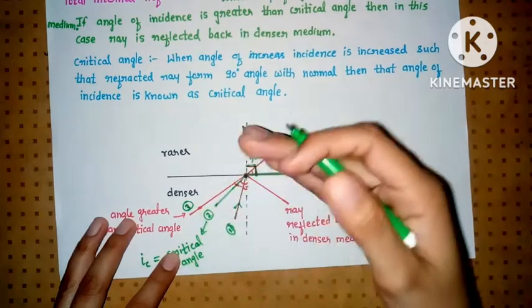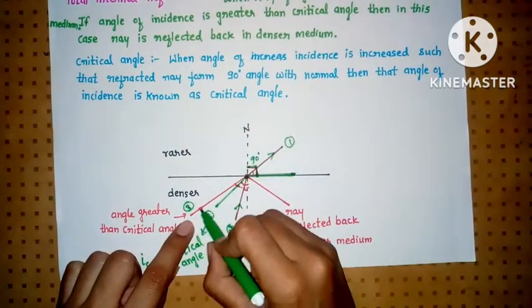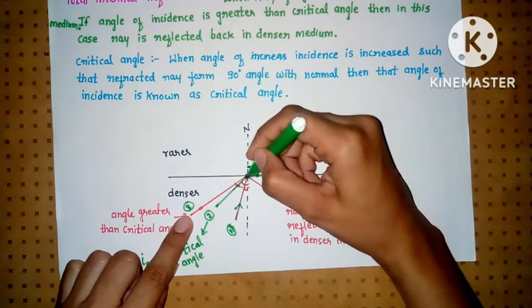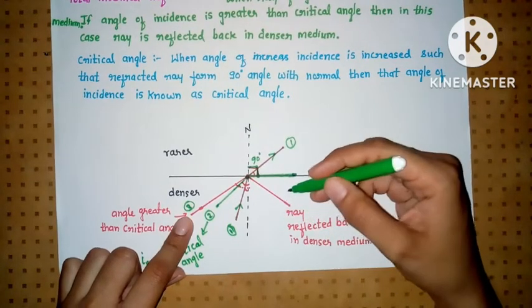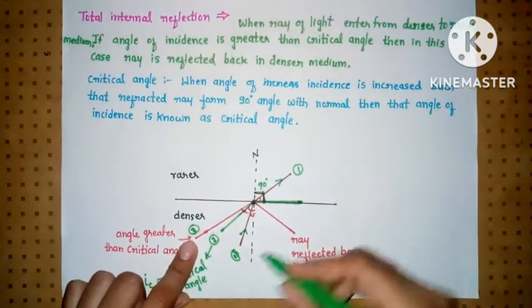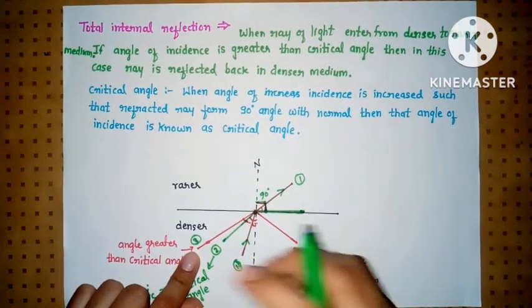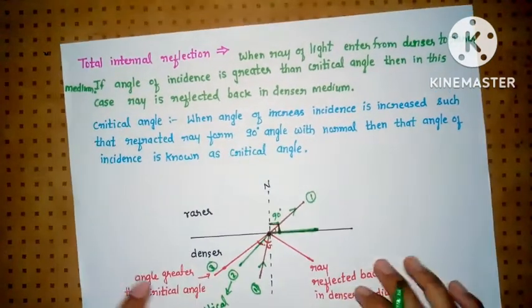we see that this incident ray shown in red color reflects back into the same medium. This means reflection occurred within the same medium. This phenomenon is called total internal reflection.